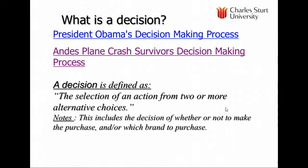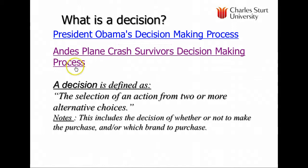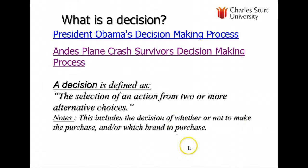A decision is defined as the selection of an action from two or more alternatives. It includes whether you make the purchase, whether you do not, or which brand to purchase. There are some nice videos you may want to watch — how President Obama makes decisions and how the Andes plane crash survivors made a very tough decision in order to survive. Both types of decision making share similarities with consumer decision making in that alternatives needed to be evaluated and choices made.